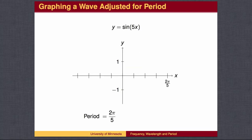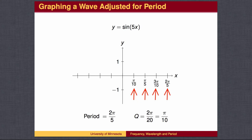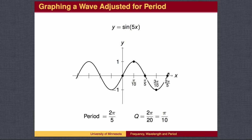To draw a graph of y equals the sine of 5x, we begin with the period, which is 2 pi over 5. We divide 2 pi over 5 into 4 equal parts, each of which is 2 pi over 20, or pi over 10. These four values are the quarter markings, denoted with the letter q. We place the quarter markings on the x-axis at pi over 10, 2 pi over 10, 3 pi over 10, and 4 pi over 10. Place points starting at x equals 0 that are in the middle, top, middle, bottom, and middle. Note that the amplitude is 1, and sketch the wave.